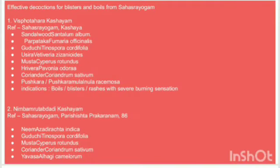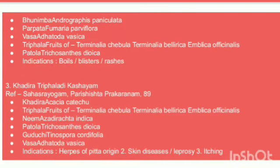Some of the yogas explained in the textbook of Sahasra Yoga are: Vispota hara kashaya, Nimba-amrithadi kashaya, and Khadira trifaladi kashaya. These kashayas can be used as snana panartha. These three yogas explained in Sahasra Yoga are mainly useful in skin diseases, especially in the case of Vispota.